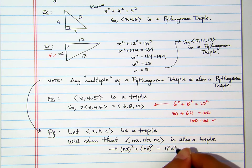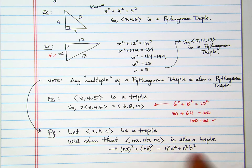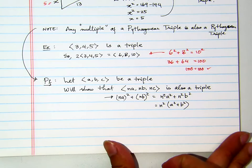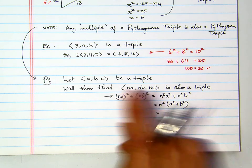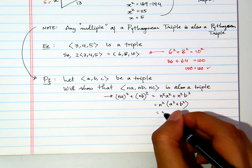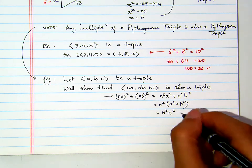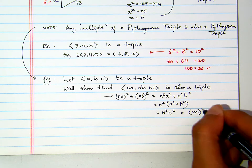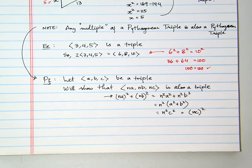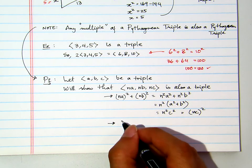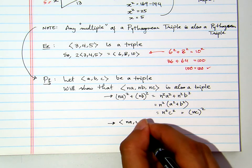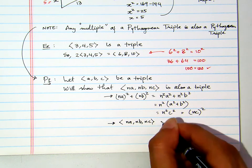This is n squared a squared plus n squared b squared. And then I factorize the n squared. Now, you see that a squared plus b squared from our assumption is a triple. So, a squared plus b squared must be c squared, which means this is (nc) quantity squared. Therefore, we have proven that na, nb, and nc is a triple.